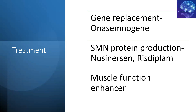The next treatment is Risdiplam, which enhances splicing efficiency at Exon 7 — the main reason SMN2 produces dysfunctional protein. With improved splicing, more functional protein is produced. The current cost is approximately $350,000 yearly. A key advantage is that it is given as a daily oral dosage, making regular administration more convenient, though the cost remains very high.